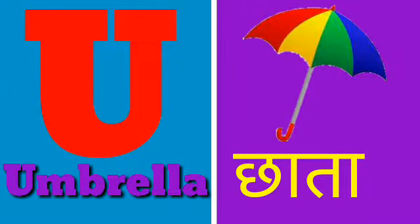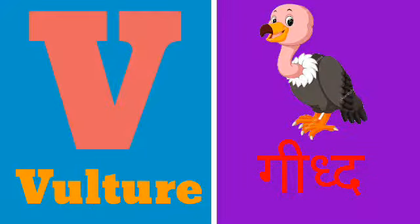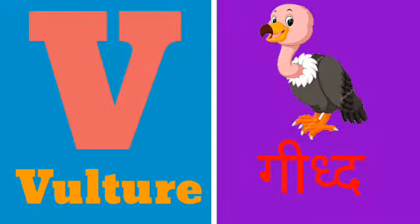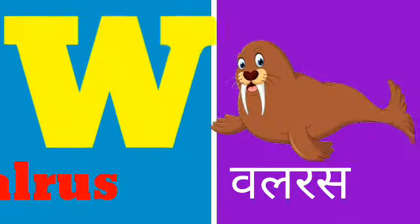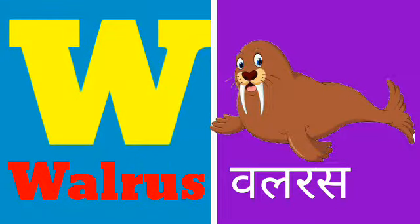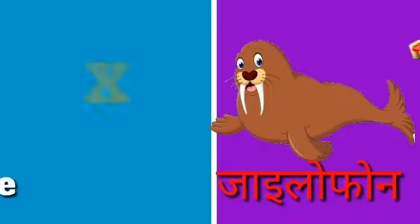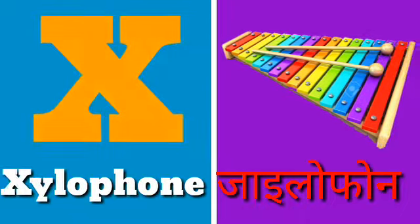U for umbrella, umbrella means chata. V for vulture, vulture means gidh. W for walrus, walrus means walrus.